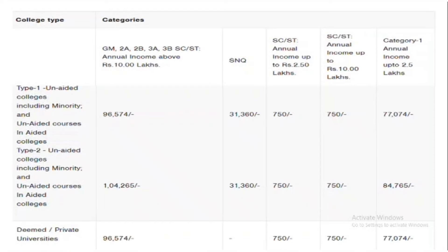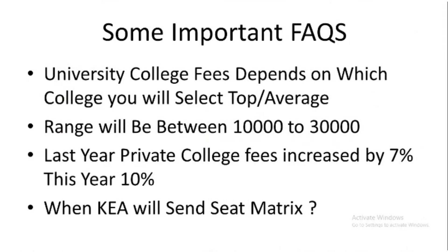If you still have any doubts, comment in the comment box. Regarding FAQs — university and college fees depend on which college you select. For example, if you select RV College of Engineering, the college fees may be around ₹30,000–₹40,000 per year on top of KCET fees. So if KCET fees are ₹1,05,000 and college fees are ₹35,000, you pay ₹1,40,000 per year with no installment — payment is directly through challan. Average colleges charge around ₹10,000–₹20,000 and top reputed colleges charge around ₹25,000–₹30,000.